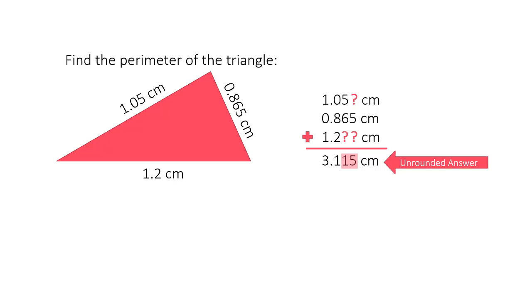Saying that the perimeter is 3.115 centimeters implies that we measured all the lengths out to three decimals and added those numbers together. But if you look at the lengths that we were given, they are all measured out to different precisions with different numbers of decimal places.